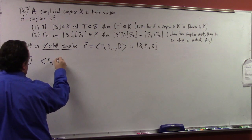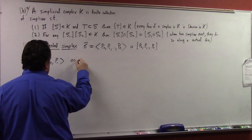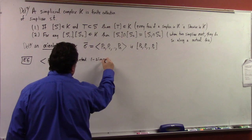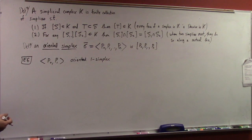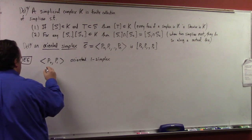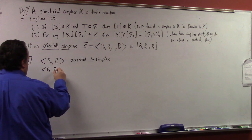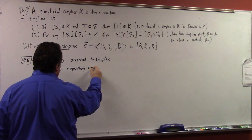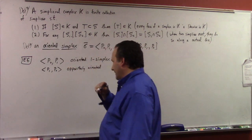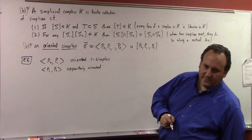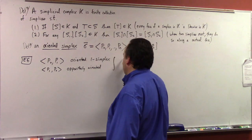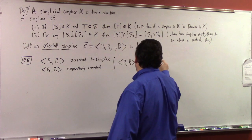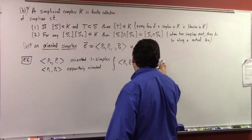We could talk about P0, P1 — this would be an oriented one-simplex. And if I were to look at P1, P0, that would be the oppositely oriented one-simplex. So, kind of like we do in Calc 3, what we're going to do is say that P1, P0 is minus P0, P1.